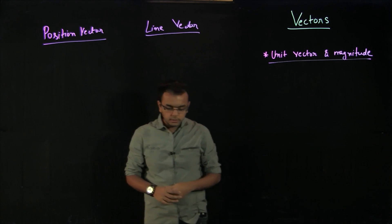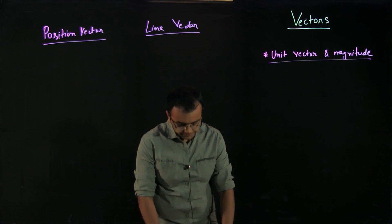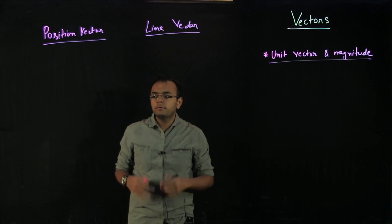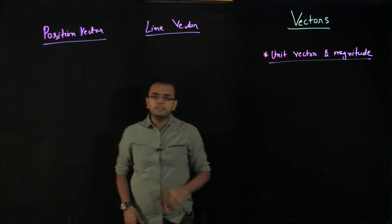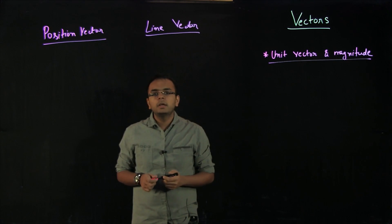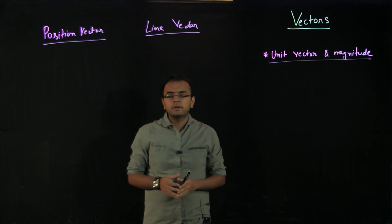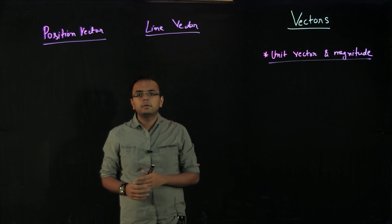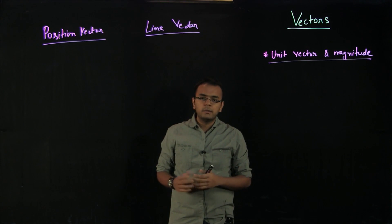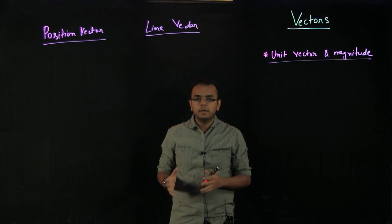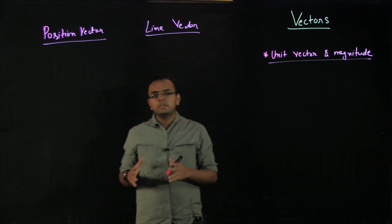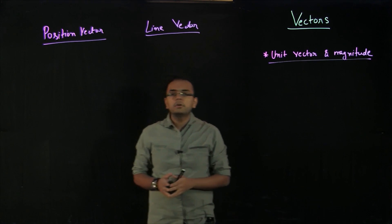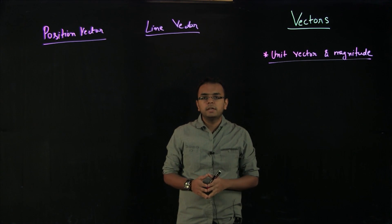Let me start by defining what a position vector is. Before going into position vectors, let me briefly summarize vectors for you in case you are not familiar. We have already learned about vectors in chapters of physics like kinematics and forces. You should know that vectors are quantities which have both magnitude and direction, and they are very important in general for scientific development.